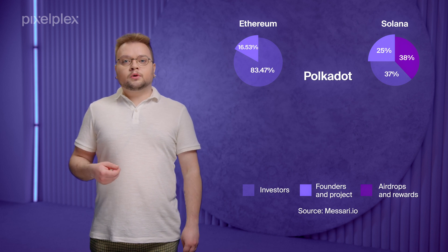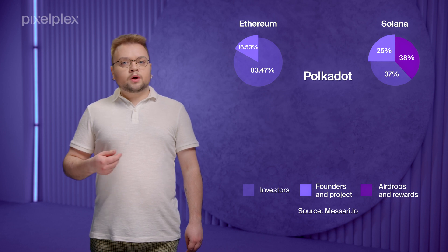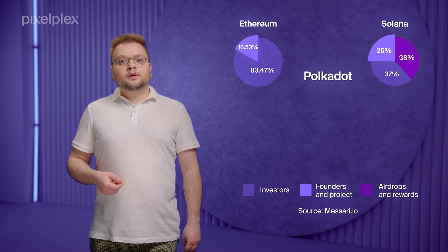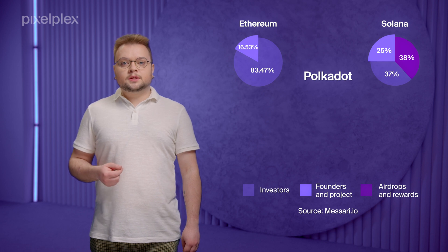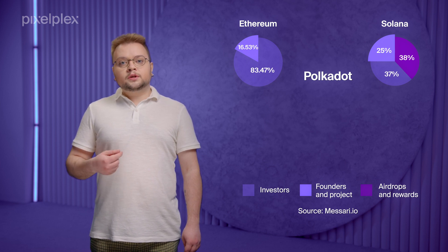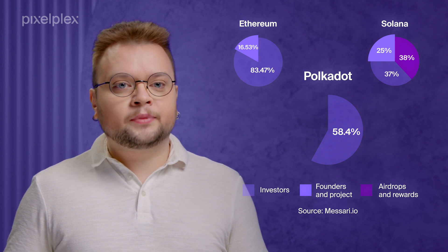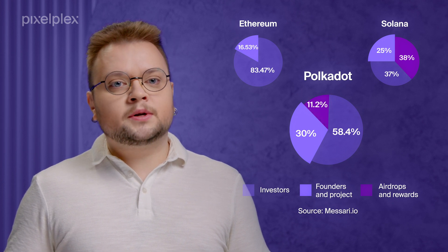Polkadot was launched in 2020. The initial supply of DOT tokens was 1 billion, and it went through four rounds of funding — one private and three public. The first ICO took place in 2017 and raised 80 million dollars, and the last one was held in 2020, generating 42.76 million dollars. As a result, investors received 58.4% of the initial token supply, the founders held 30%, and the remaining 11.6% was allocated through rewards and airdrops.